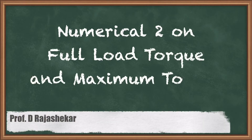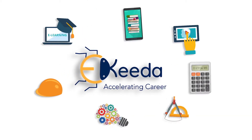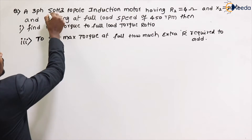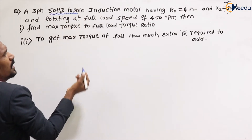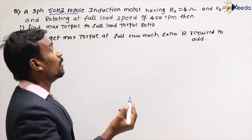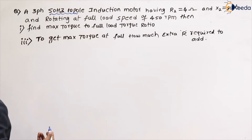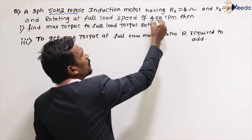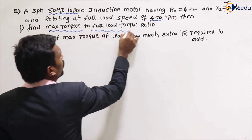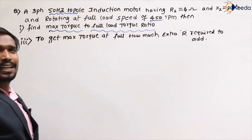Hi, dear friends. In this video we are going to discuss a numerical on maximum torque and full load torque — this is the second numerical. The question: a three-phase, 50 Hz, 10-pole induction motor having rotor resistance r2 of 4 ohms and x2 of 80 ohms, rotating at a full load speed of 450 rpm.